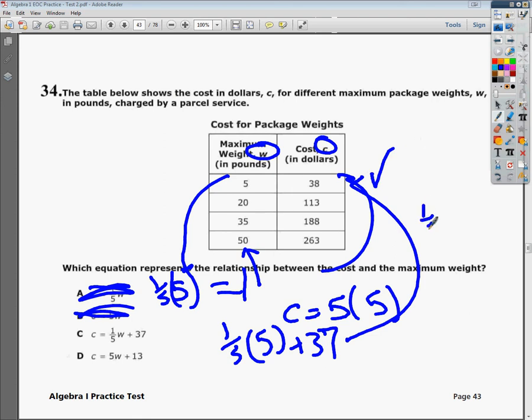Unfortunately, it falls apart when I plug in 20. So if I do one-fifth times 20 plus 37, well, one-fifth times 20 is four. So when I add four to 37, I'm going to get 41, and that's not anywhere near 113, so C doesn't work either.